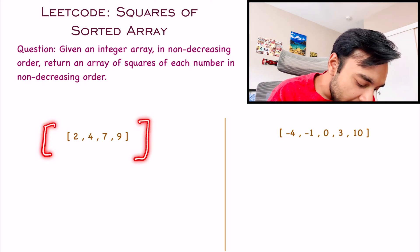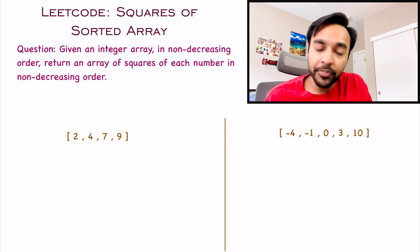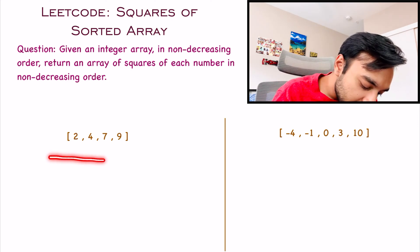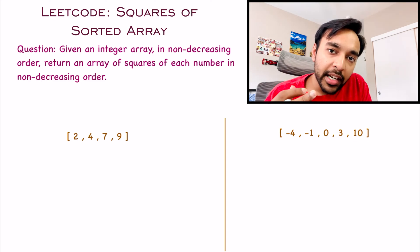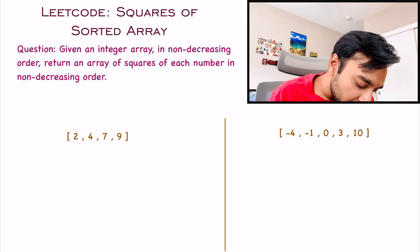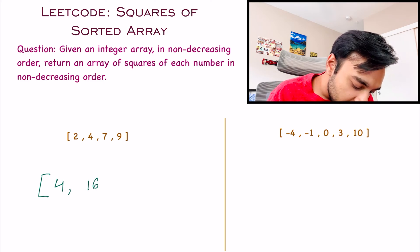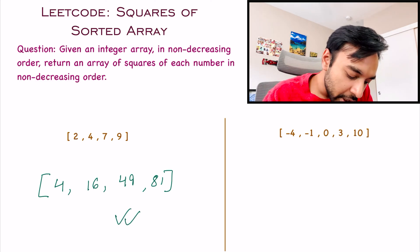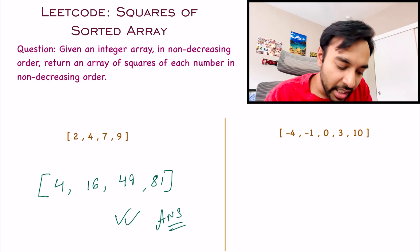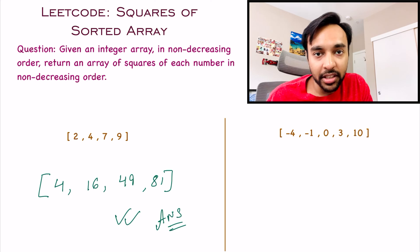In our first test case, I have the array 2, 4, 7, and 9. You can see that this array is in a non-decreasing order, correct? So now, if I have to return an array that has the square of each number in a non-decreasing order, what will I do? I will just square each number. And you can see that this array is also in an ascending order and all the elements are squared. So this will be your answer.